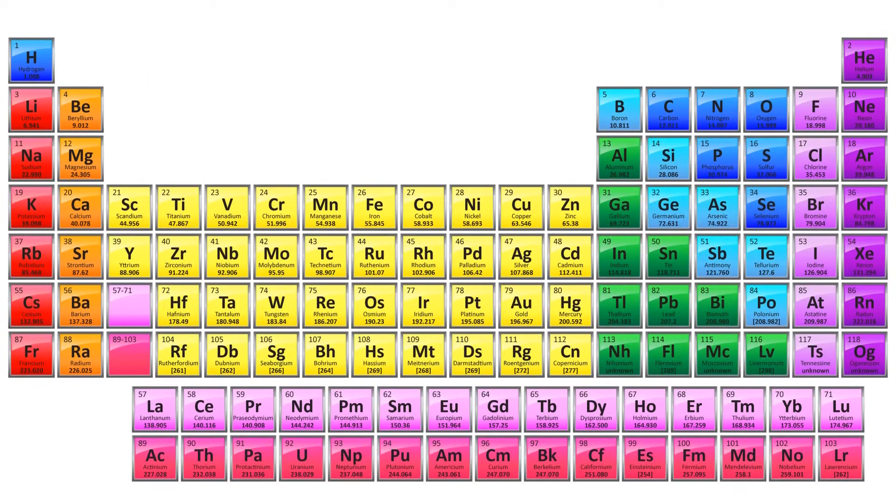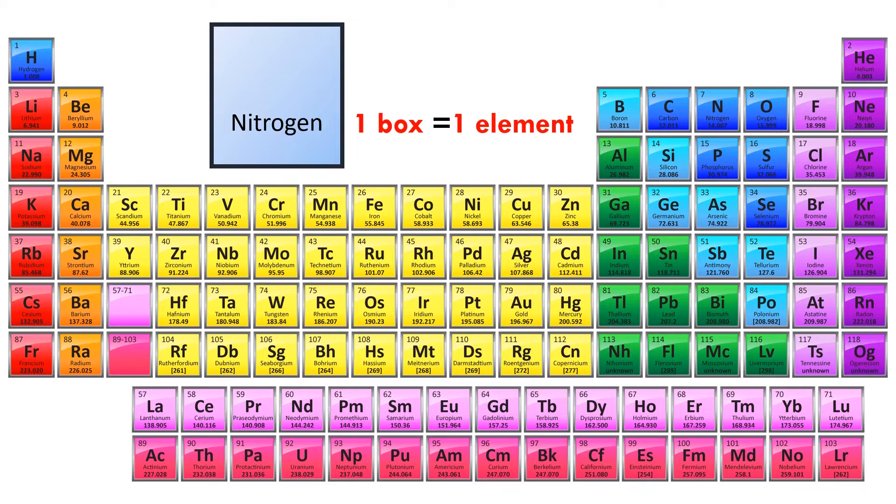Here is a periodic table. Every element has a name. In each box of the table, we will find only one name. For example, nitrogen. One box corresponds to one element.